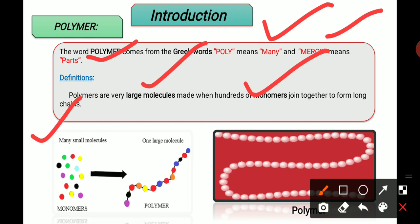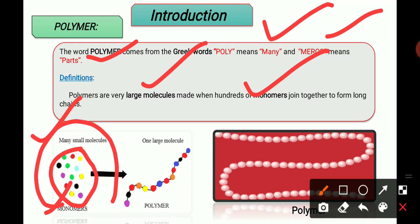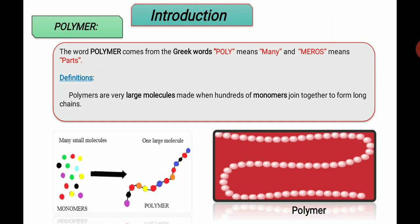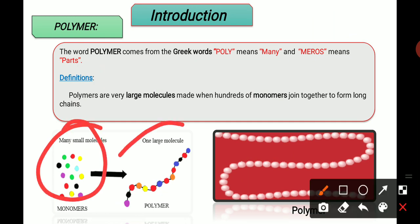In the figure, you can see many small molecules — each small molecule is called a monomer. When hundreds of monomers are joined together to form a long chain or one large molecule, this is called a polymer. Look at figure two, which I have zoomed in so you can easily understand what a polymer is — this is a long chain polymer.